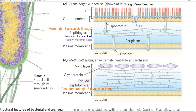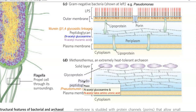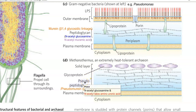Archaea cell wall is referred to as pseudomurein or pseudopeptidoglycan. It is made up of two monomeric subunits — one common with bacteria is N-acetyl glucosamine, however N-acetyl muramic acid is not present. It is replaced with N-acetyl talosaminuronic acid. Additionally, the Archaea cell wall may have a crystalline layer or glycoproteins on its surface. Another difference is the type of linkage: bacteria use beta-1,4 glycosidic linkage, whereas Archaea use beta-1,3 glycosidic linkage.